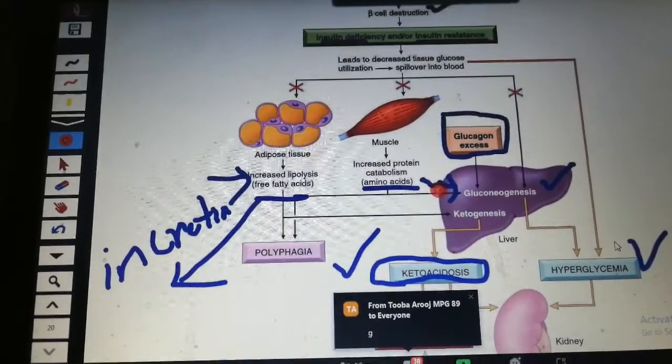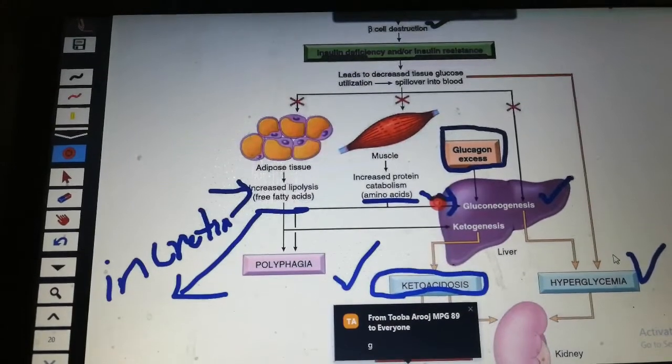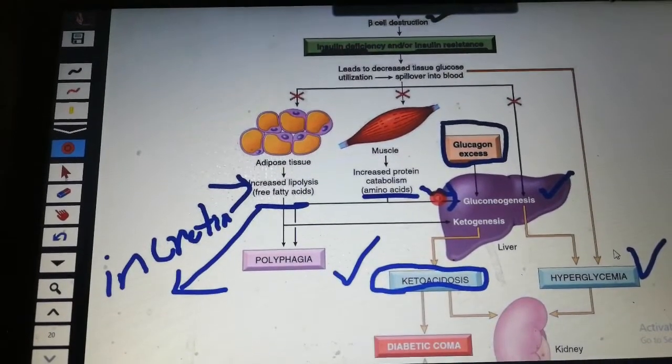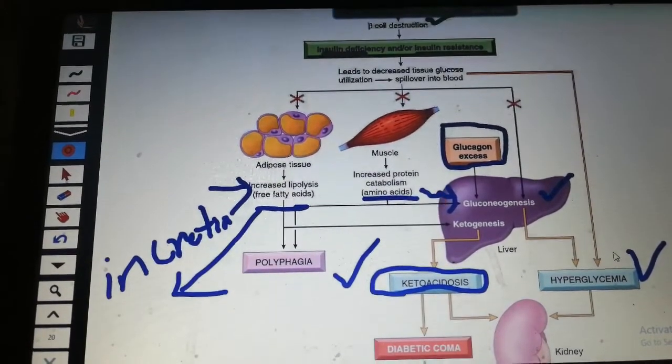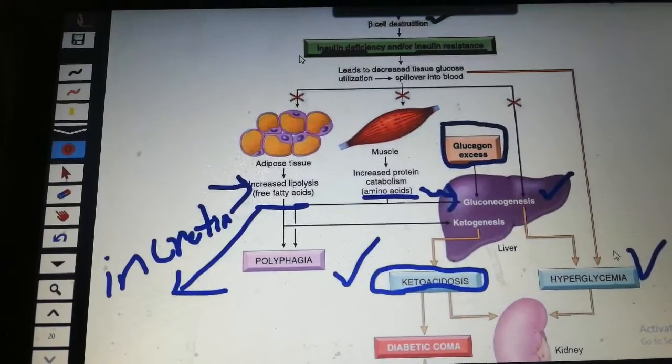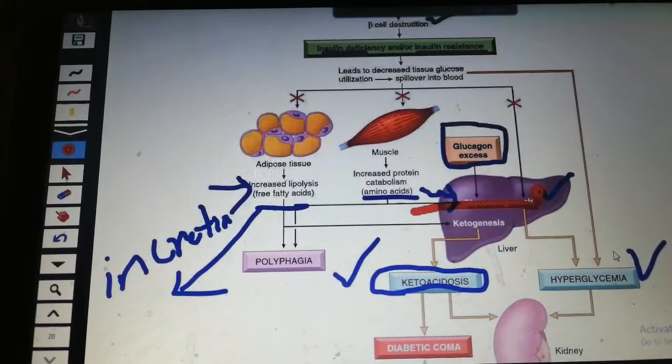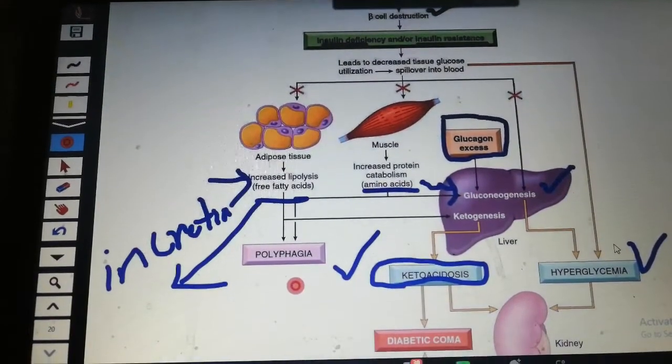We can promote glycogenolysis. Glucose also creates glucose through gluconeogenesis. Amino acids are also involved in gluconeogenesis.